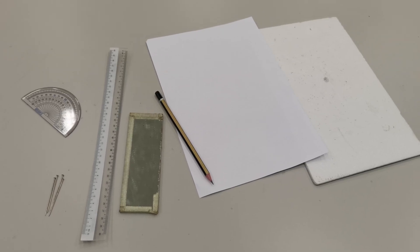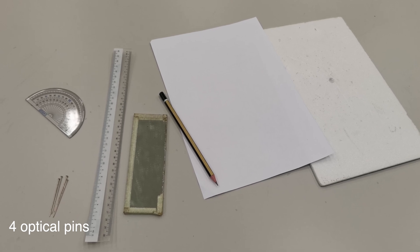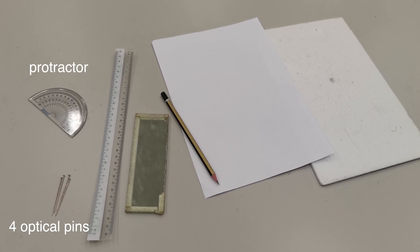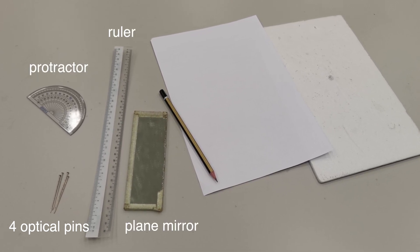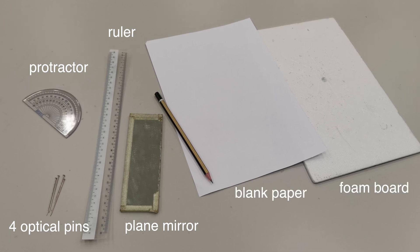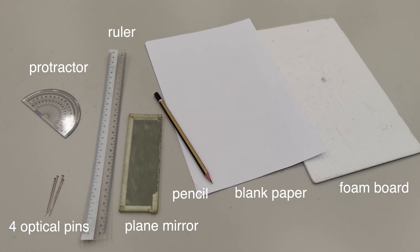For this experiment, you're going to need four optical pins, a protractor, a ruler, a plain mirror, a foam board, a piece of paper, and of course, a pencil.